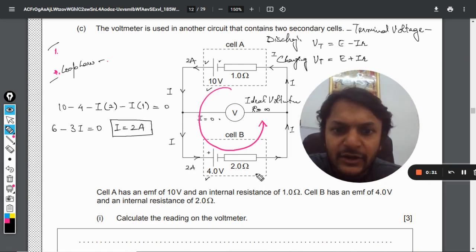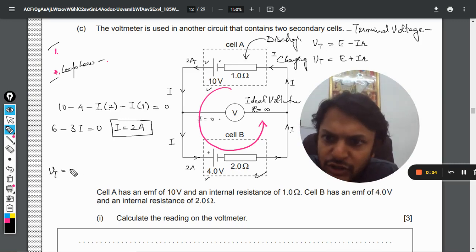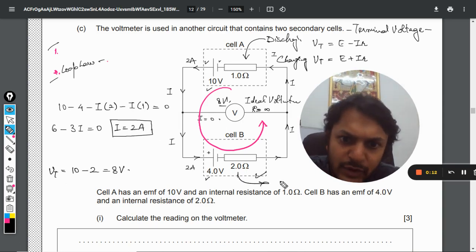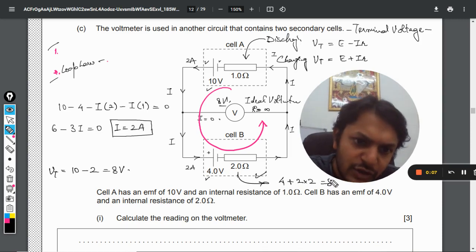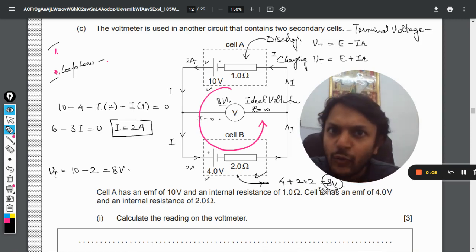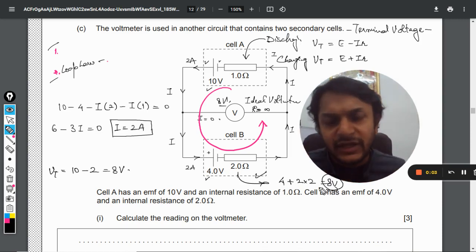So E plus IR will be applied on the second battery and E minus IR will be applied on cell A. So I am going to be a little quicker now. So it is 10 minus 1 into 2, that is 2, so it is 8 volt. So the reading of the voltmeter will be 8 volt. And for the second battery also, if we want to apply, it will be E plus i into r. So even this is coming out to be 8 volt. So our answer will be 8 volt. So with this, all the best, bye.